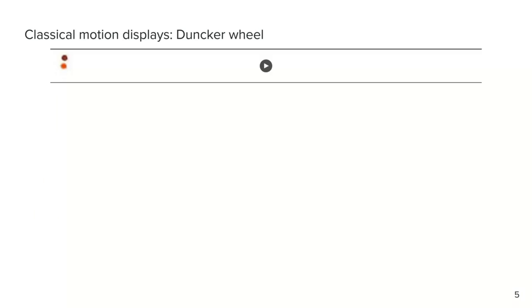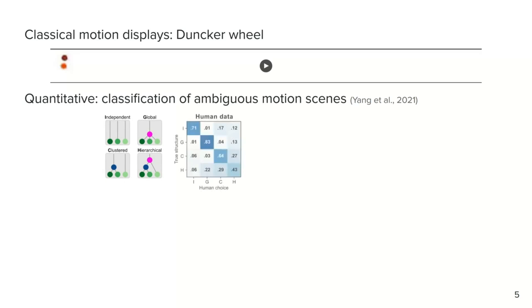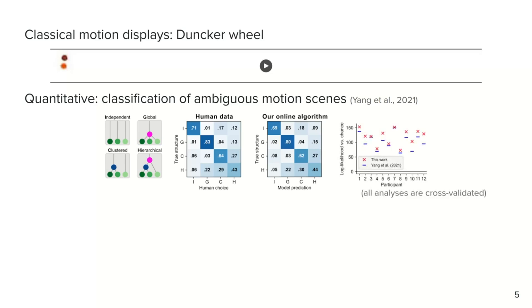This algorithm explains human percepts in a variety of tasks, ranging from classical motion displays such as the Duncker wheel, where the algorithm, like humans, identifies joint rightward motion for both dots plus rotation for the dot on the rim, to more complex quantitative explanations, such as the classification of ambiguous motion scenes into four candidate latent structures. Humans show distinct error patterns in this classification task, and our algorithm captures these errors both qualitatively and quantitatively. Interestingly, the algorithm explains human responses better than a previous ideal observer-based model.